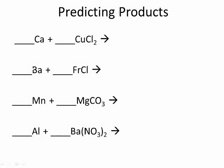Now we're getting to predicting products of the next type of reaction, and it's going to be a single replacement or single displacement. You'll hear displacement and replacement used interchangeably — some people call it replacement, some call it displacement. It's the same thing. To replace is to displace, and if something is displacing something, you're replacing something.